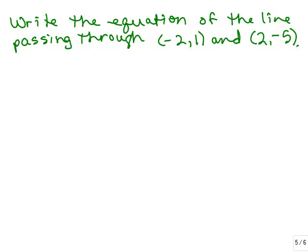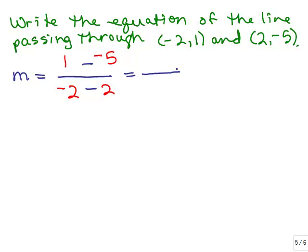Here's the same problem using method 2. I need to determine the slope. We take one ordered pair and put the y over the x, and the other ordered pair y over x. It doesn't really matter which ordered pair you put before the minus sign. So that's going to be 1 minus negative 5 is 6, negative 2 minus 2 is negative 4, and that's just negative 3 halves. So now I know the slope is negative 3 halves.